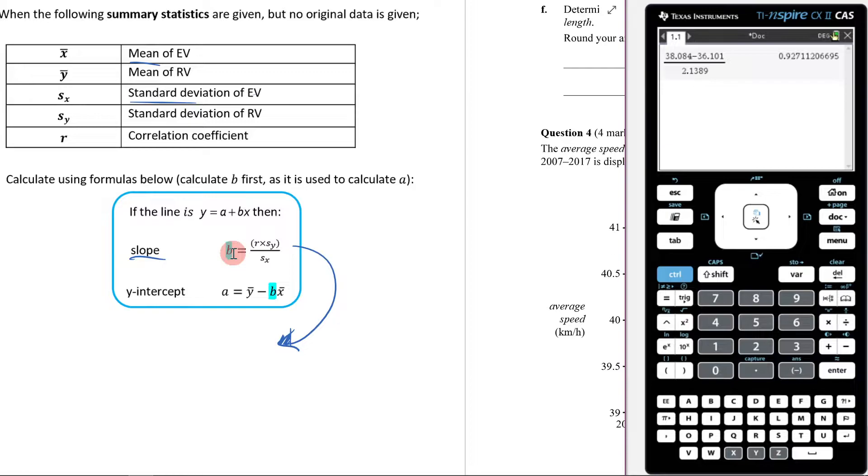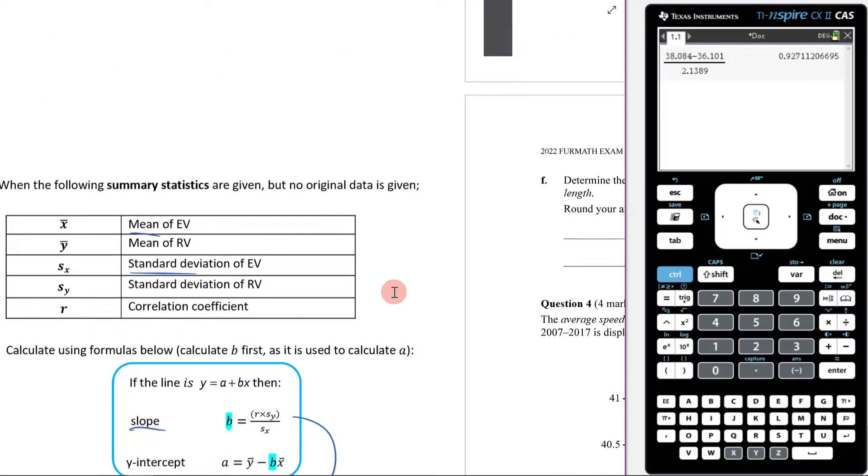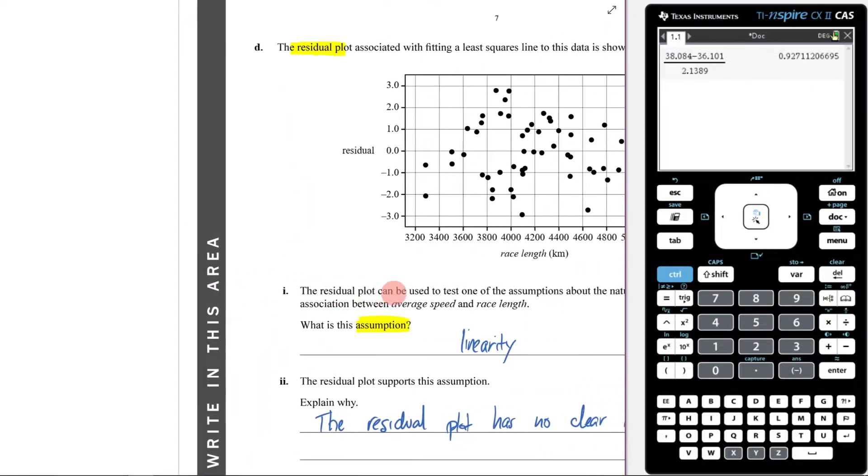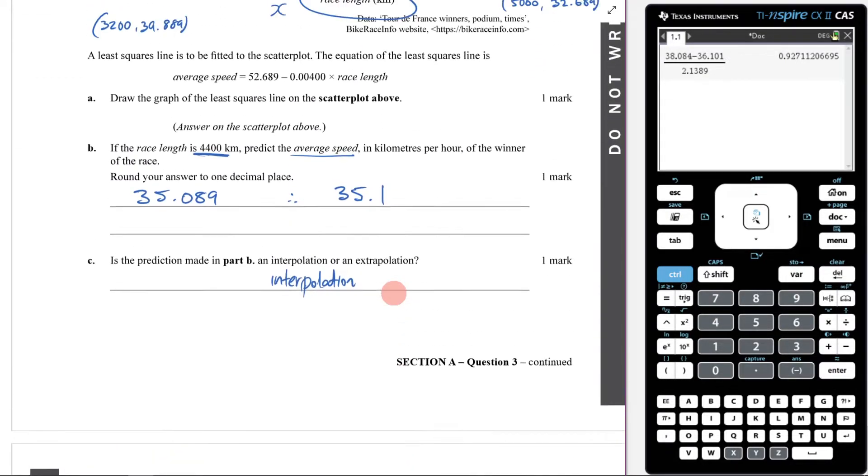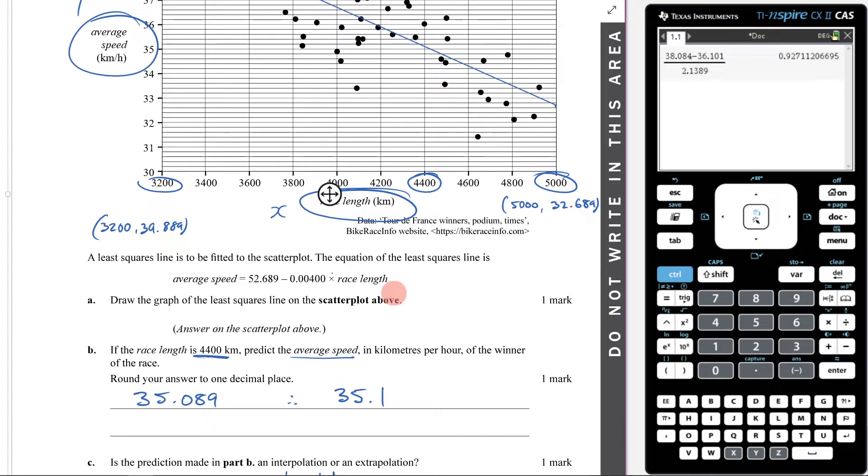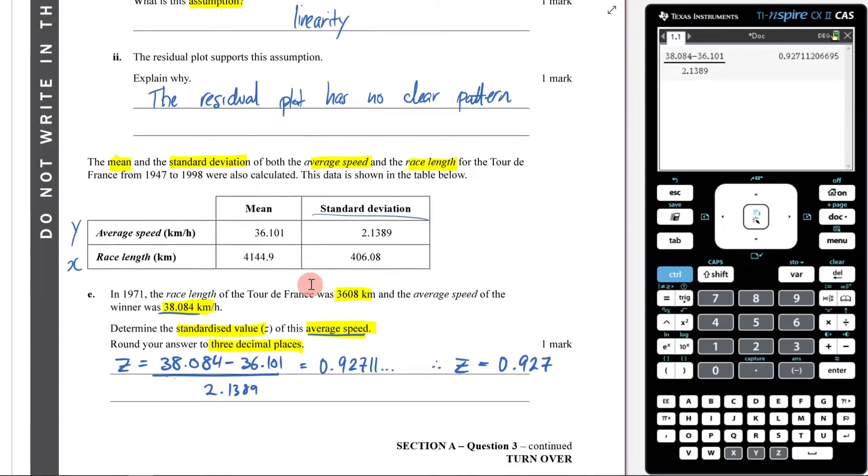Now I need to figure out what the b value is going to be, because the slope is equal to my r times the standard deviation of the y over the standard deviation of the x. So what is my slope going to be? Well, I need to come all the way back up here. My slope is going to be that value right there, negative 0.004.